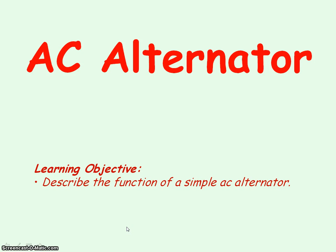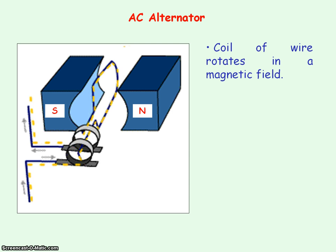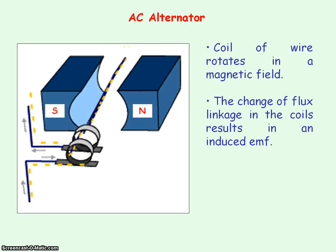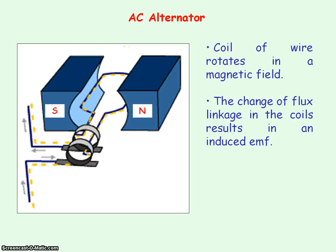We're going to be looking at the function of a simple AC alternator, which is an alternating current generator, and that makes use of electromagnetic induction. An AC alternator consists of a coil of wire which rotates within a magnetic field. As there's a change in flux linkage in the coils, this results in an induced EMF.